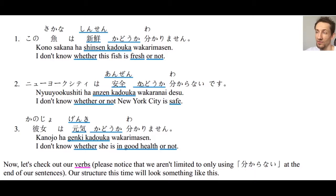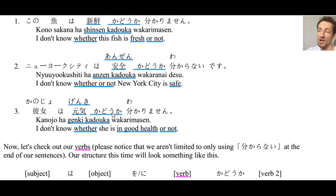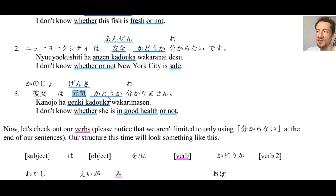安全かどうか means 'safe or not,' and わからない means 'I don't know.' Number three: カノジョは元気かどうかわかりません — I don't know whether she is in good health or not. 元気 means healthy. And that's it for our adjectives — very simple, just add かどうか and you get 'whether [adjective] or not.'